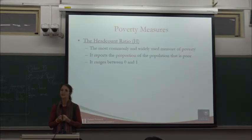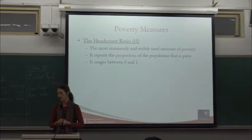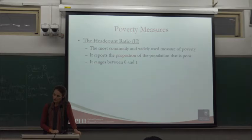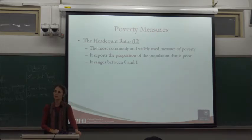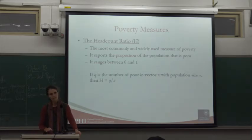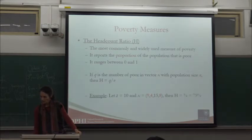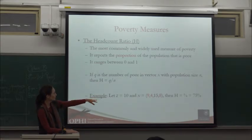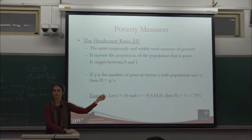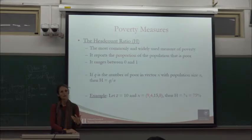It's going to be a common theme of this course: the need to communicate MPI very clearly to non-experts. The headcount ratio reflects the proportion or share of the population who are poor, ranging between 0 and 1. If Q is the number of poor people and N is the population, it's Q over N. If using a survey, it's Q times sampling weights over N. In a society of four people where three are poor, the headcount ratio is 75%.